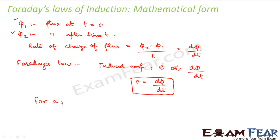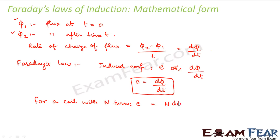Now if you are considering a coil with N number of turns instead of a single loop, then the induced EMF would be N times dΦ/dt.